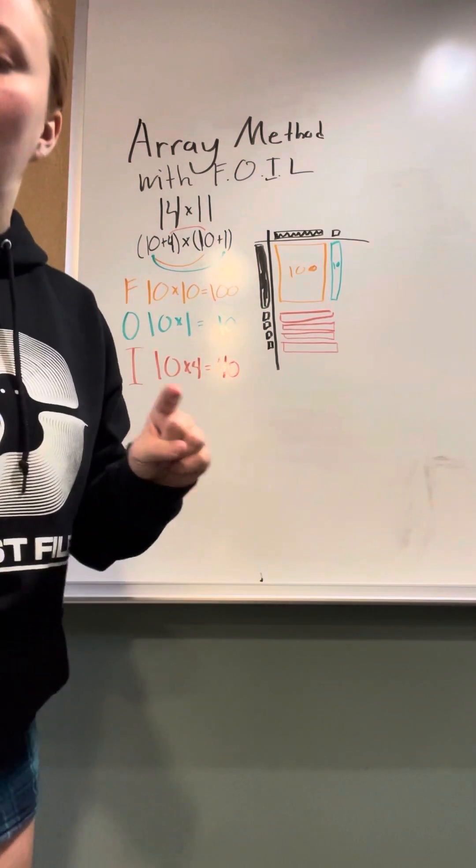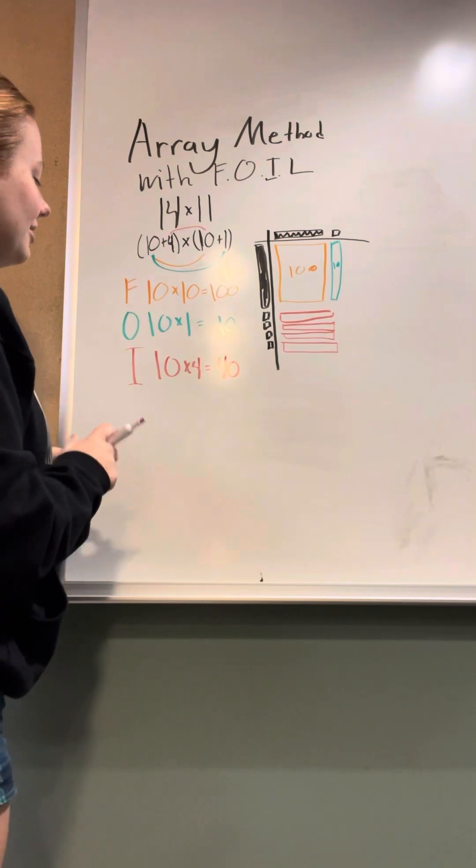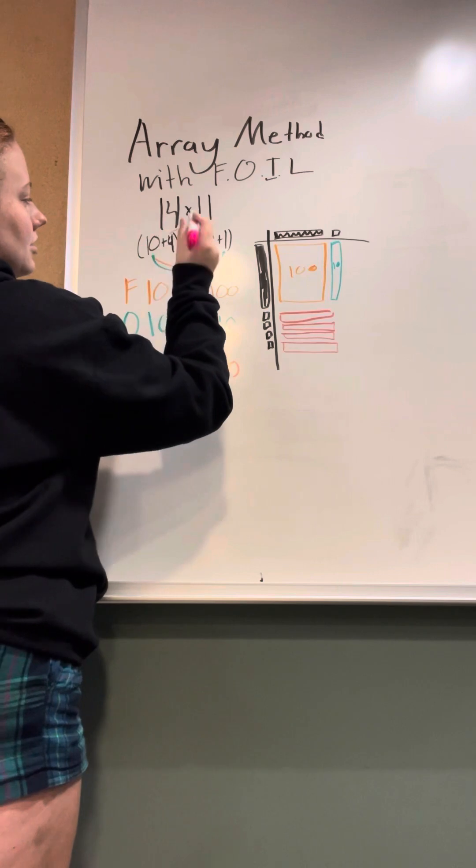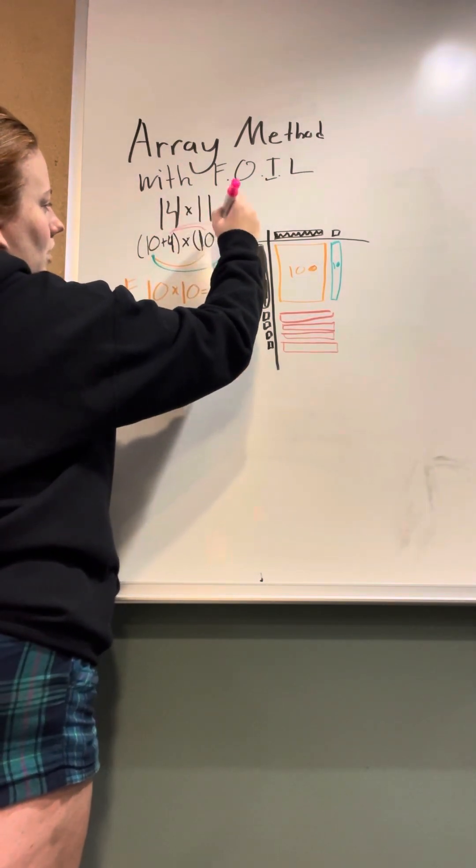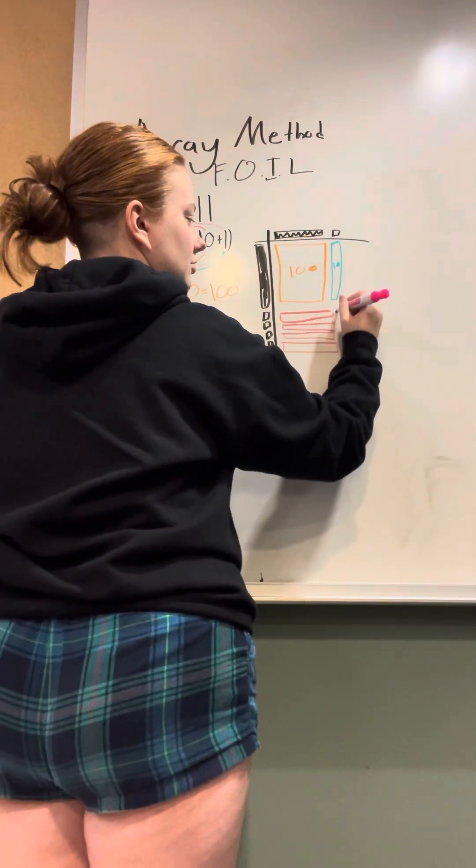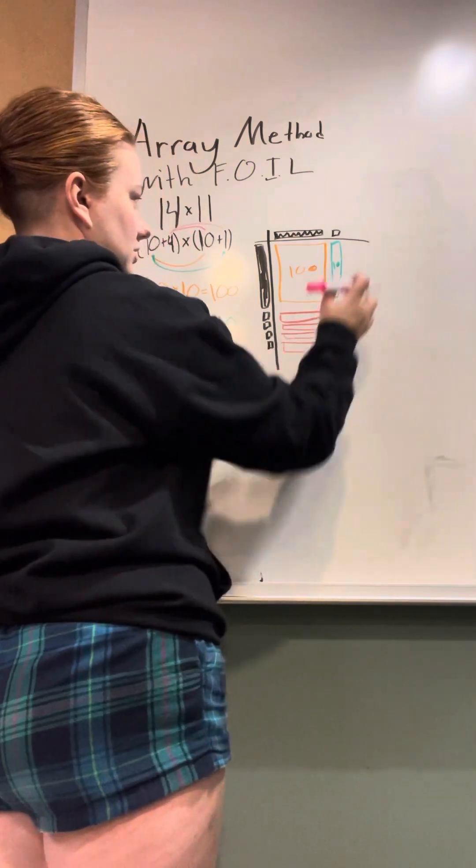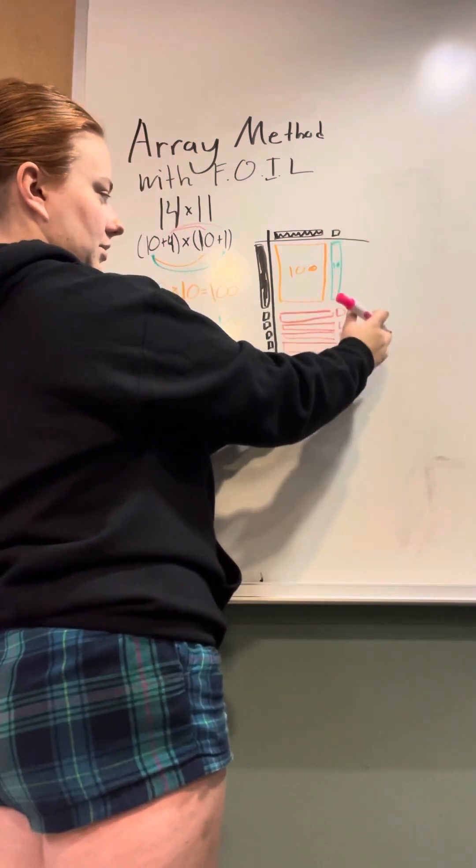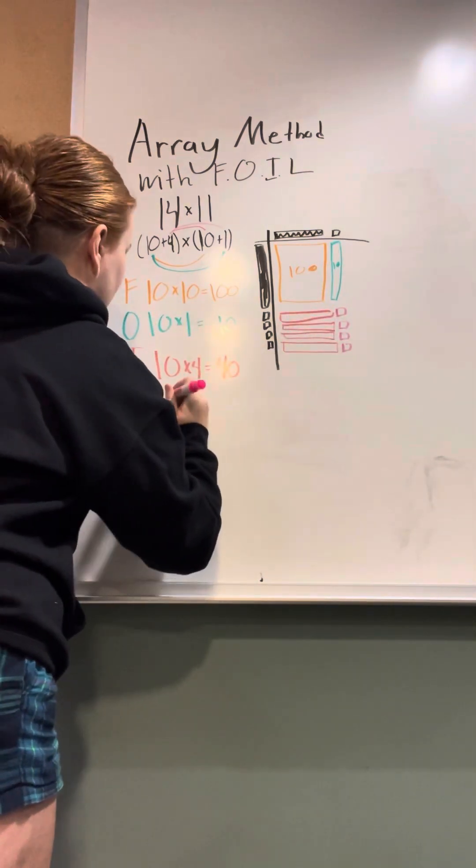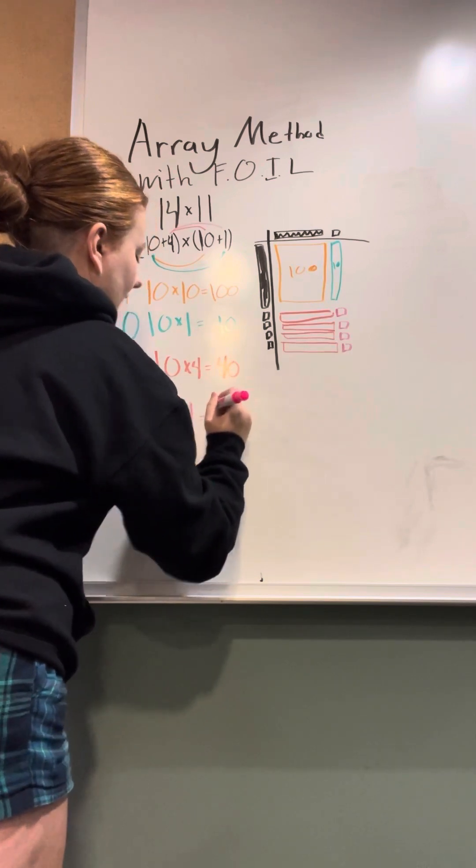And then last one. Change colors again. New color. And now we're going to do the L, which is last. So that's going to be the 4 and the 1. So over here, that looks like 1 times 4. So I do a single unit times these, when you bring them down, look like that. And then L for last, and we're going to do 4 times 1, which equals 4.